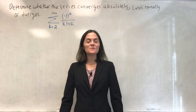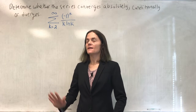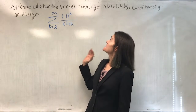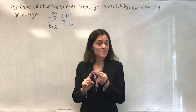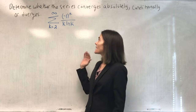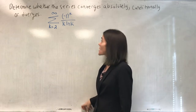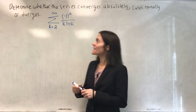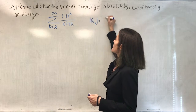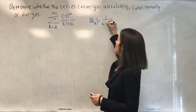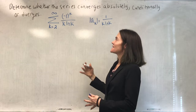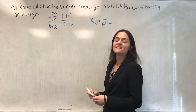I want to do a few examples where we have series that potentially have both positive and negative terms, and we need to determine if we have absolute convergence, conditional convergence, or divergence. Here is the first example. We see this series as alternating because if you take the absolute value of the k-th term, we get 1 over k·ln(k). And with the (-1)^k, we see exactly this is alternating.